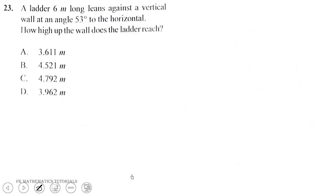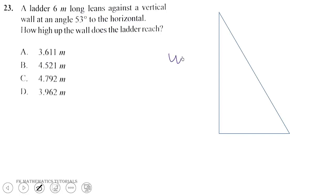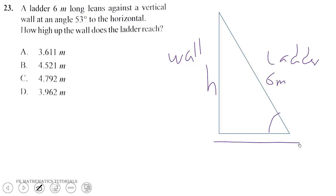A ladder 6 meters long leans against a vertical wall at an angle of 53 degrees to the horizontal. How high up the wall does the ladder reach? This is the wall with the ladder — the ladder is 6 meters, this is the height up the wall, and this is the horizontal.